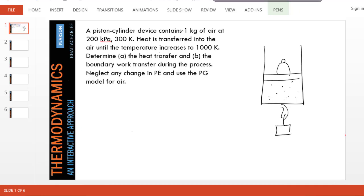This is another closed process. In this process, air is being heated from a given temperature of 300 Kelvin to a high temperature of 1000 Kelvin, and we are asked to find the heat transfer and the boundary work involved.